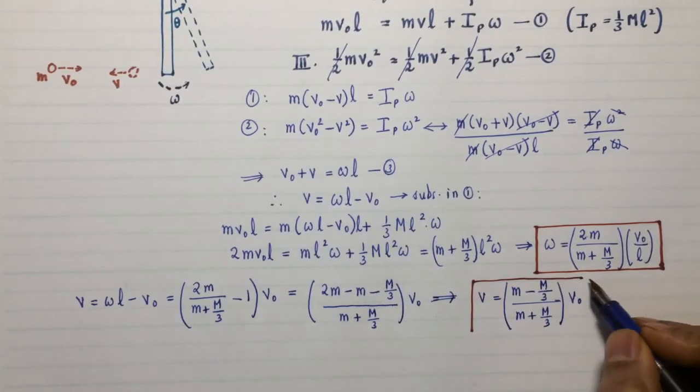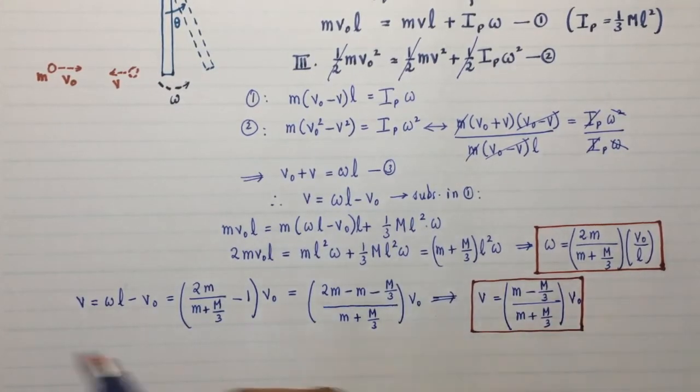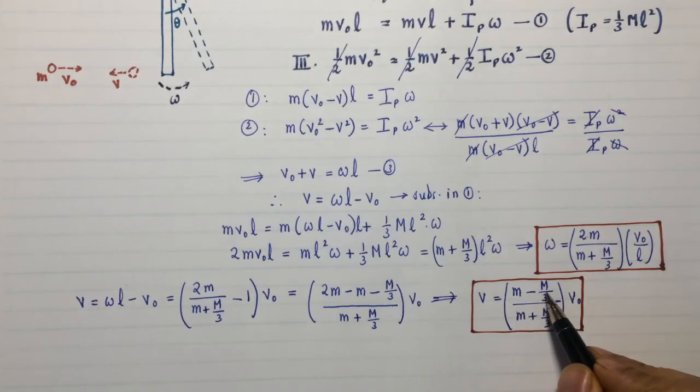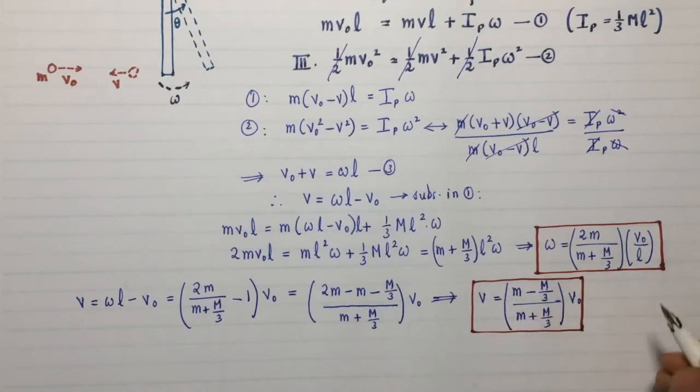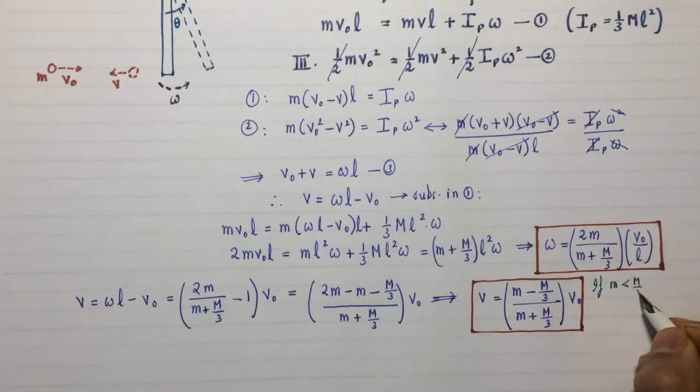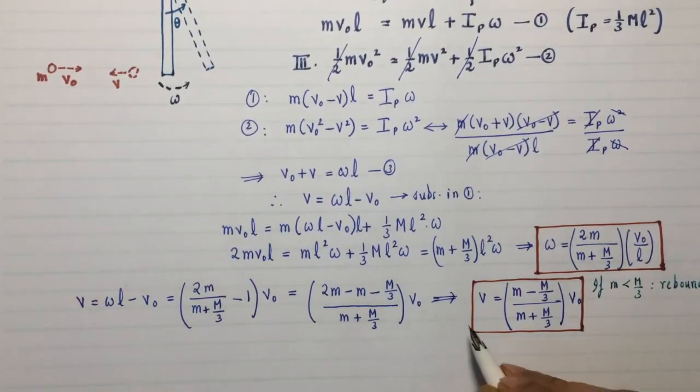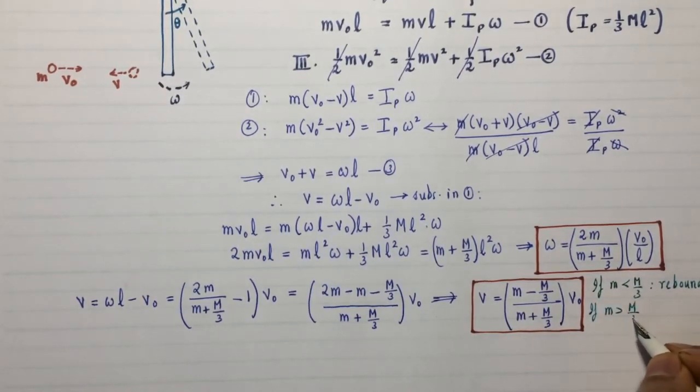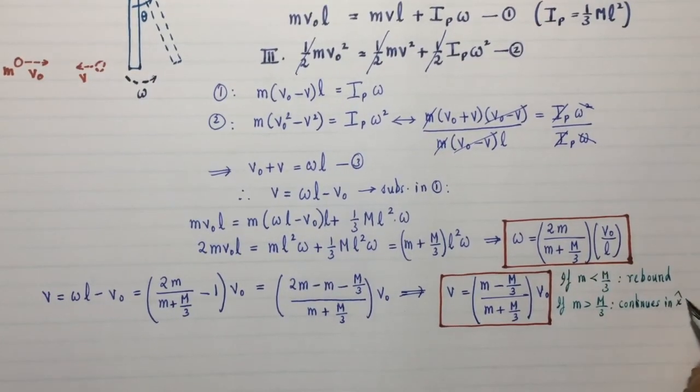It also tells you something about the direction of the ball. Imagine this ball is really light and the stick is really heavy. So M is less than M/3, then it certainly is going to rebound, because you'll get a negative sign there. If M is less than M/3, rebound. However, if the stick is really light and M is bigger than M/3, then this ball will just plow through and continue in the same direction, x hat.